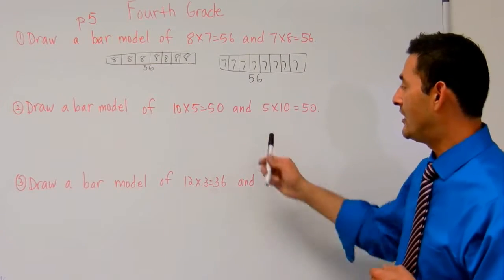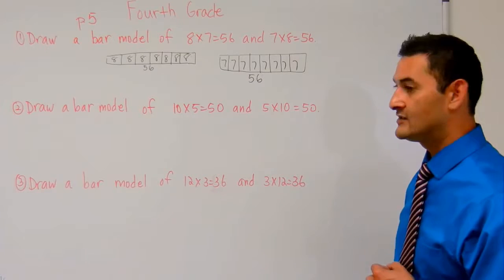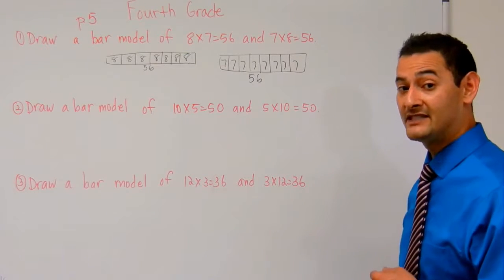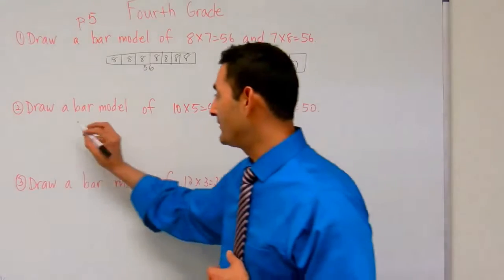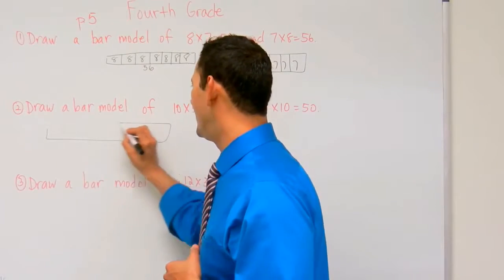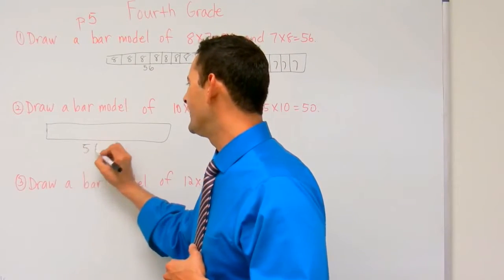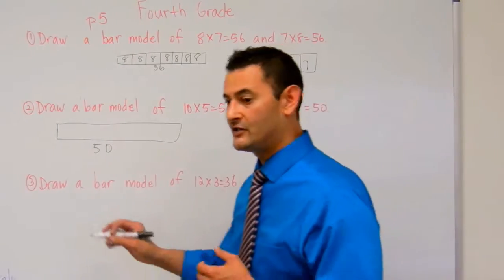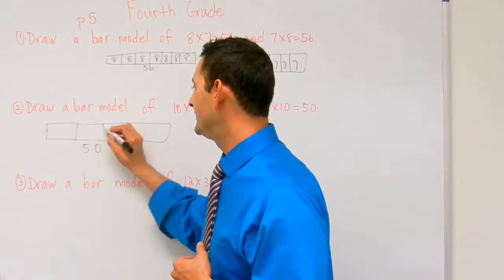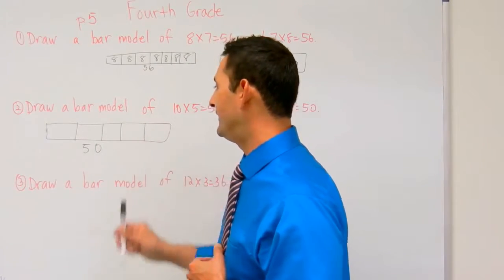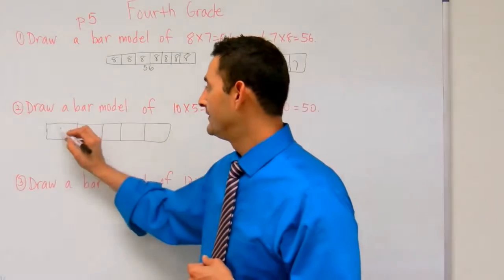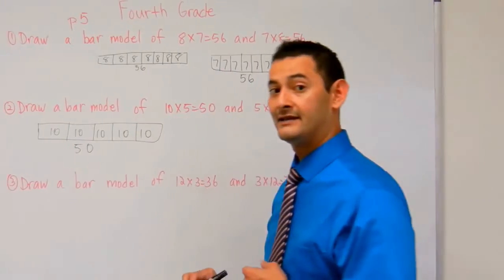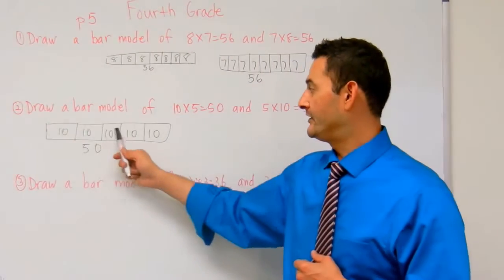Now let's draw another bar model. Here it says draw a bar model of 10 times 5 equals 50 and 5 times 10 equals 50 — that's just the commutative property. I'm going to draw a bar model. We know the total is going to be 50. So for 10 times 5, we do it 5 times: 1, 2, 3, 4, and 5. Each one of these pieces will be worth 10 — 10, 20, 30, 40, 50.